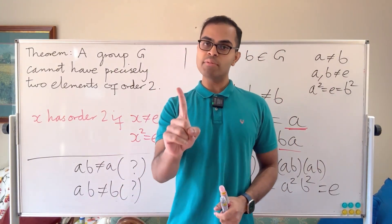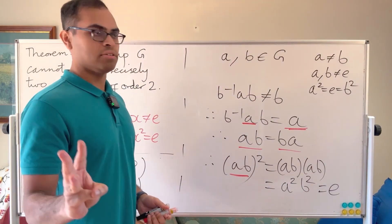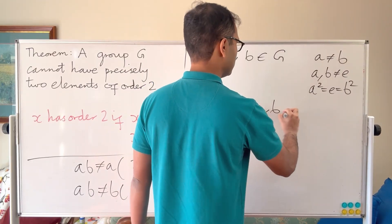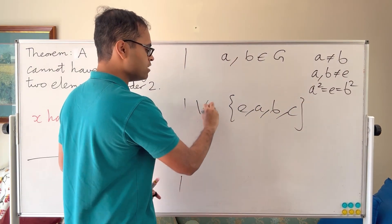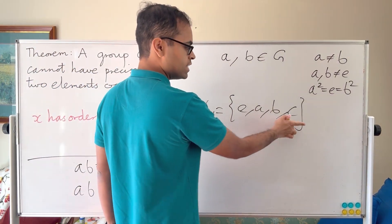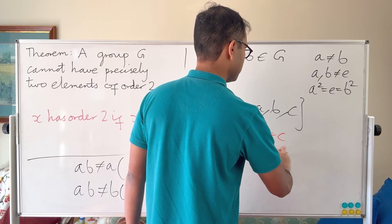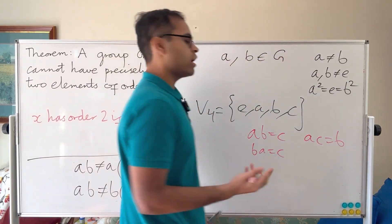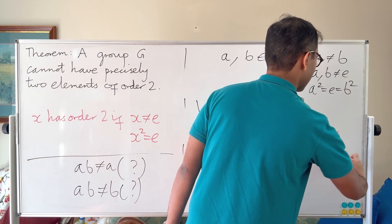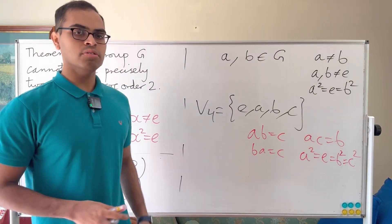Two observations to close: you can have one element of order 2, for example a cyclic group of order 2. You can also have three elements of order 2. A great example is the Klein four-group V₄ = {e, a, b, c}, where the product of any two non-identity elements is the third — it's abelian. For example, ab = c, ba = c, ac = b, and a² = b² = c² = e. All three non-identity elements have order 2.